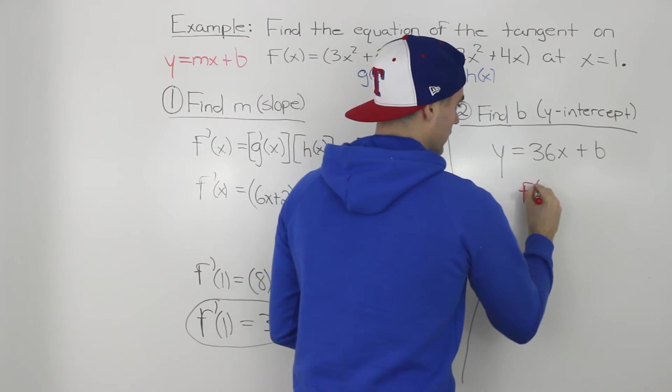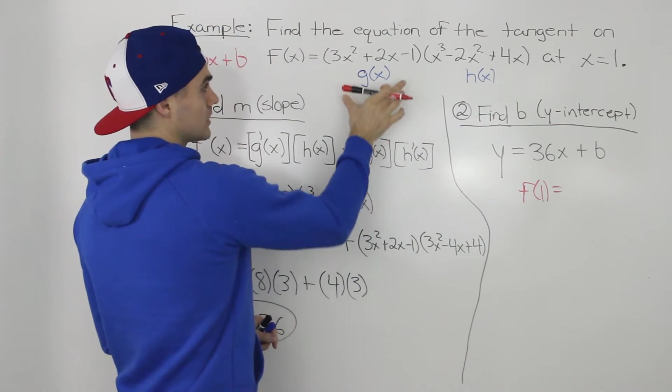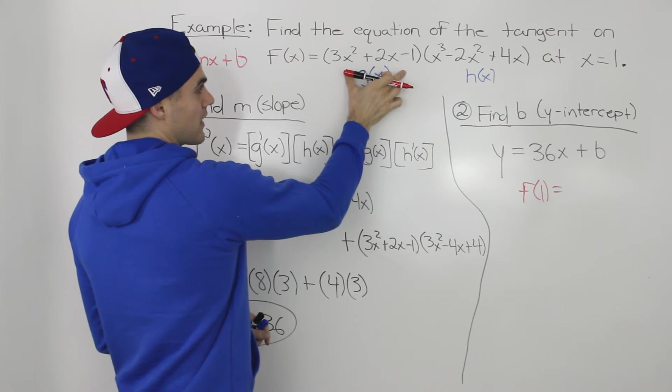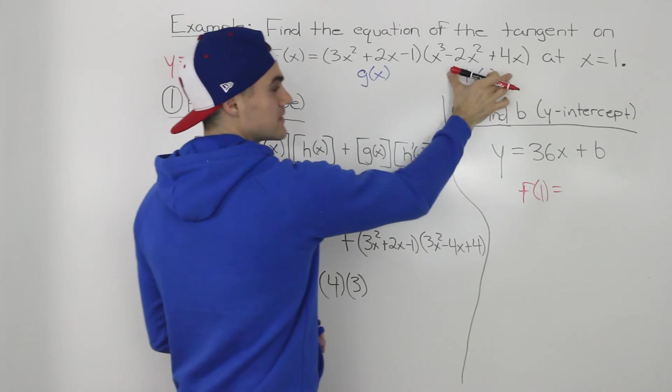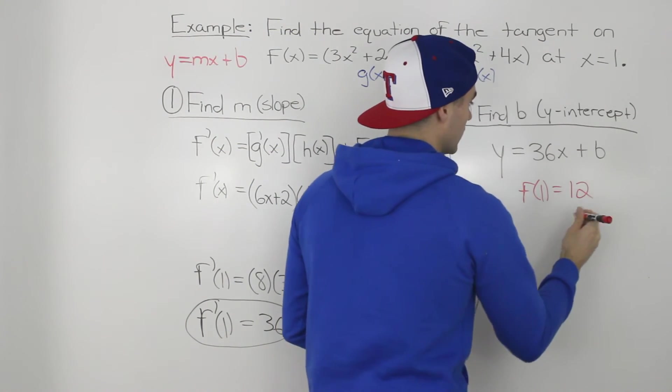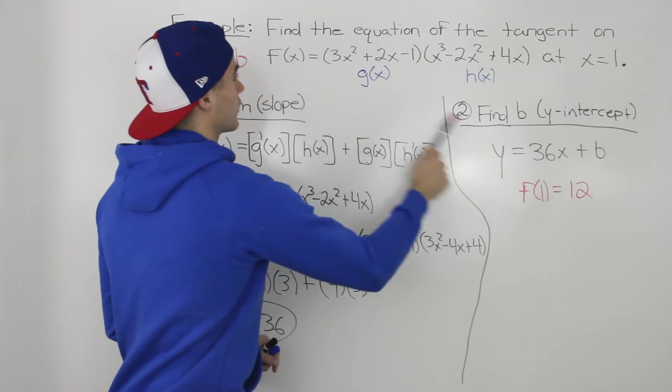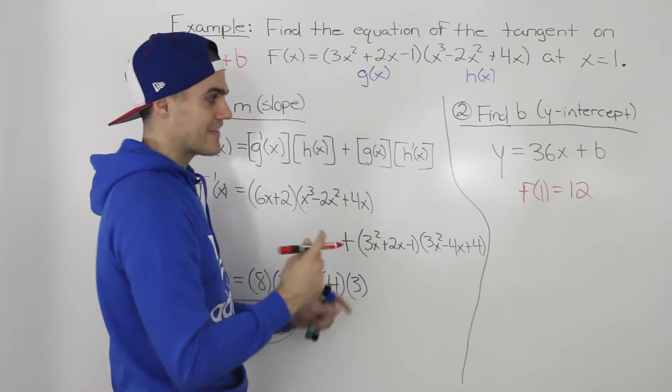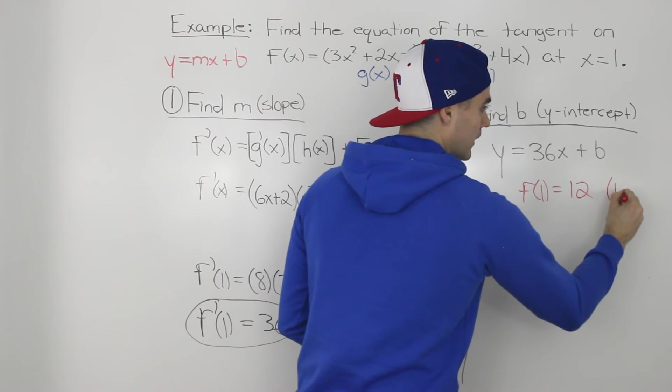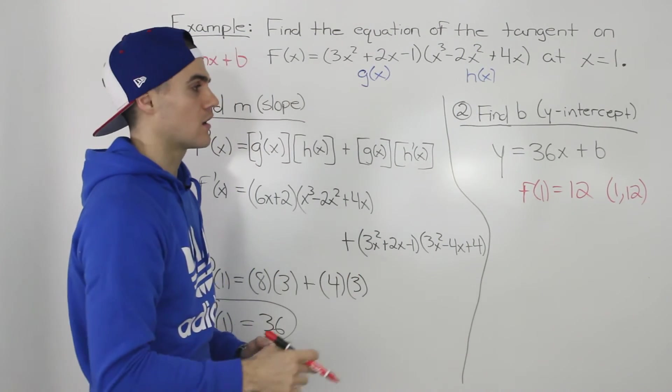If we plug in f of 1, or an x value of 1 in the original function, this first bracket here would be 4, and then this second bracket would be 3. So 4 times 3 is 12. So at an x value of 1, a y value of 12 occurs on this function, and at that coordinate, 1 and 12, we are finding the equation of the tangent.